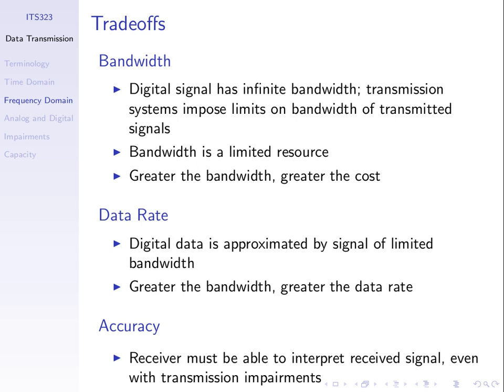In summary: greater bandwidth means greater cost — that's bad. But greater bandwidth also means greater data rate — that's good, we want high data rate. And greater bandwidth means greater accuracy of the signal, which means fewer errors.